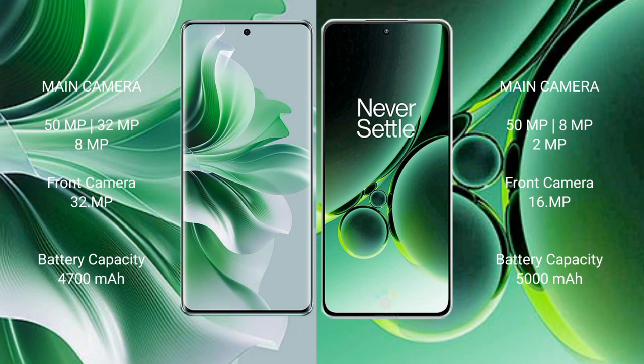Oppo Reno 11 Pro features a rear triple camera setup: 50MP plus 32MP plus 8MP, and a front camera of 32MP. OnePlus Nord 3 features a rear triple camera setup: 50MP plus 18MP plus 2MP, and a front camera of 16MP.